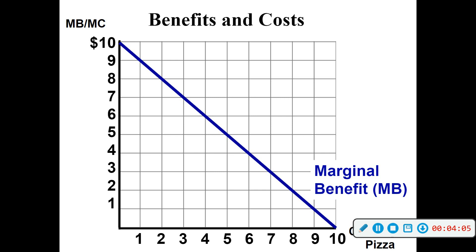That first one you buy, you get a lot of benefit. But if you buy six orders of nachos, by that sixth order you're probably not getting near as much benefit as you did out of the first one, assuming you're eating all of them. So you have a downward sloping marginal benefit because the perceived benefit — where you would be willing to pay $10 for the first one and $9 for the second one — goes down over time as you consume more of that item.